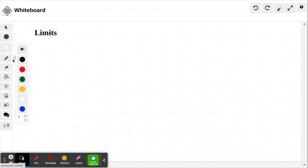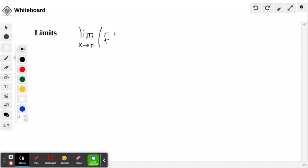So, the standard limit notation looks like this. You have the word lim, and then an independent or input variable, I'm going to call it x, approaching some number that I'm going to call n of some function f of x.